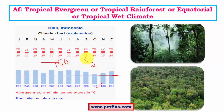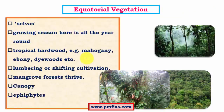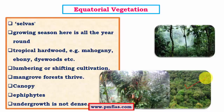Coming to equatorial vegetation — it is a lush green forest with very thick canopy, which is a blanket of foliage creating a dense layer. The rainforests in the Amazon are called 'selvas' — a very thick, dense forest. Remember this term, as it can be asked in prelim exams.